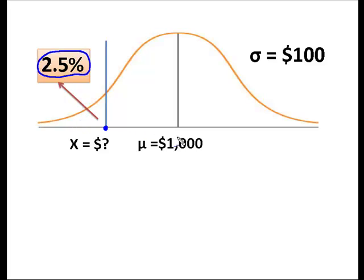So I know that the mean is $1,000, and I know my standard deviation is $100, so now what I've got to figure out is how much data falls between this unknown value of x and the mean of the distribution.